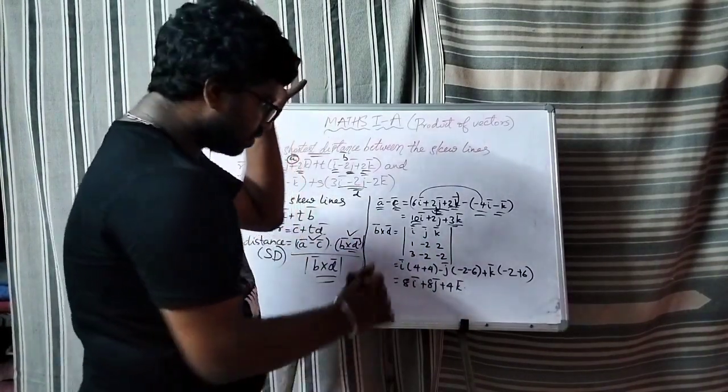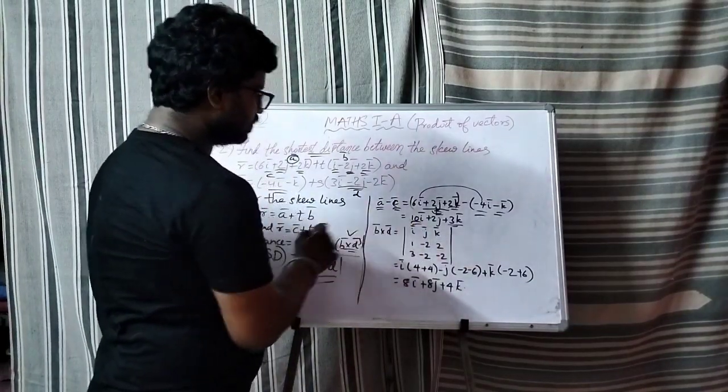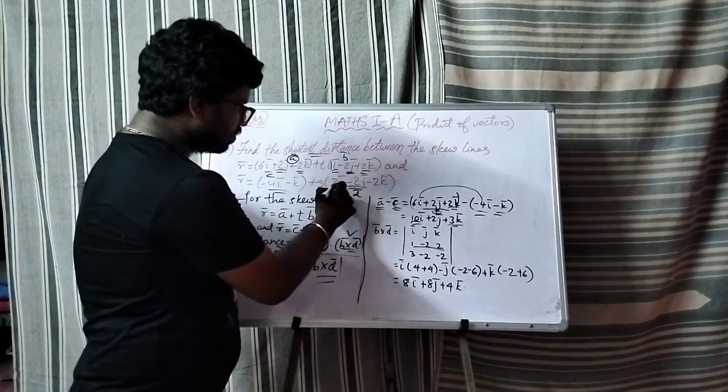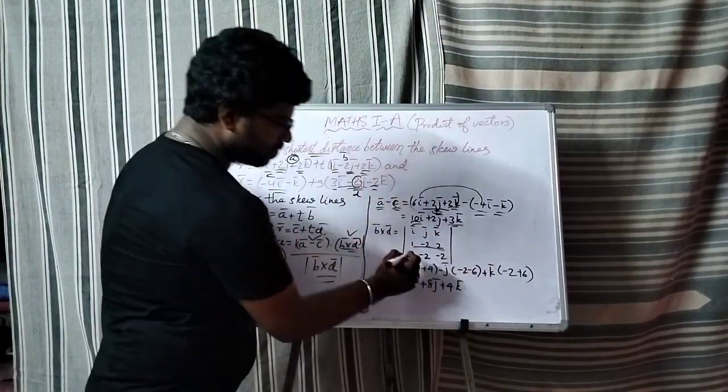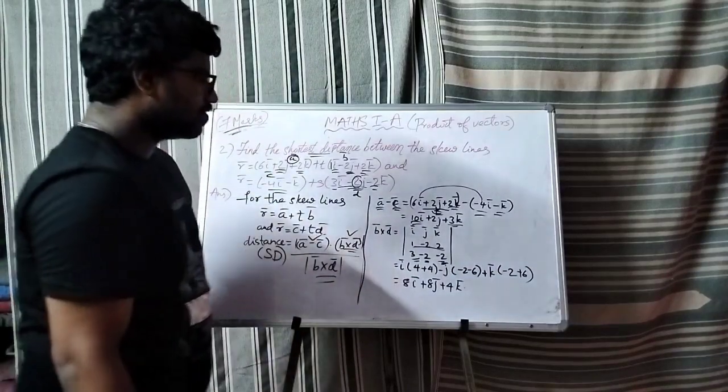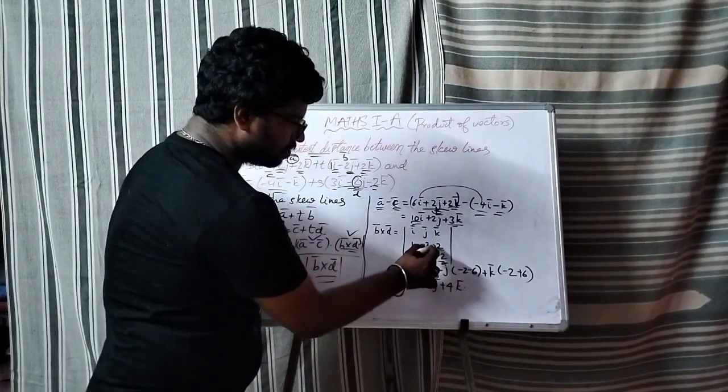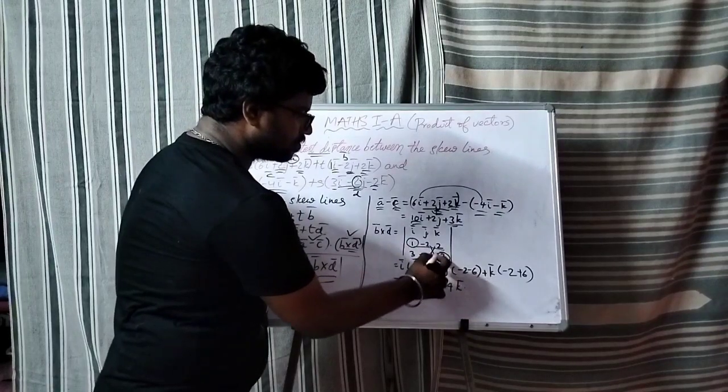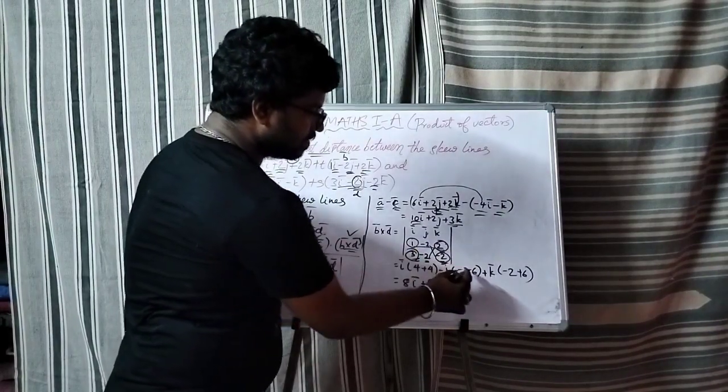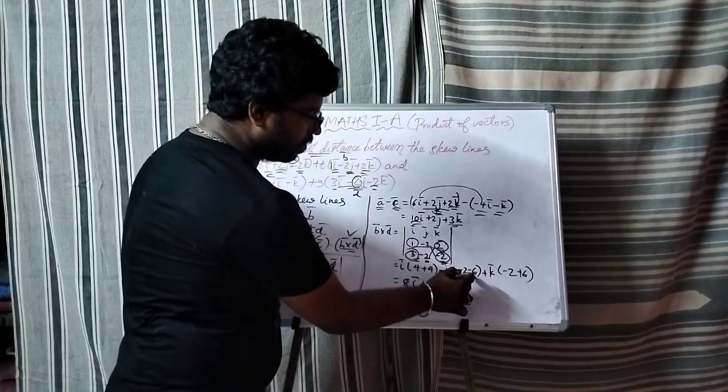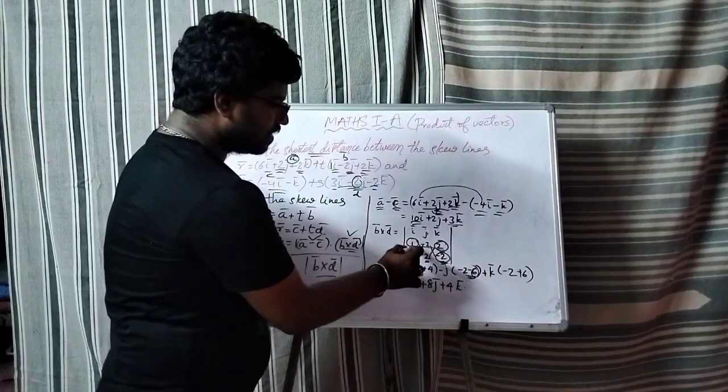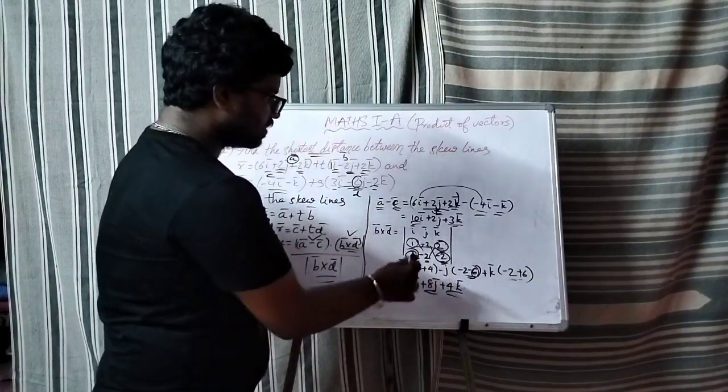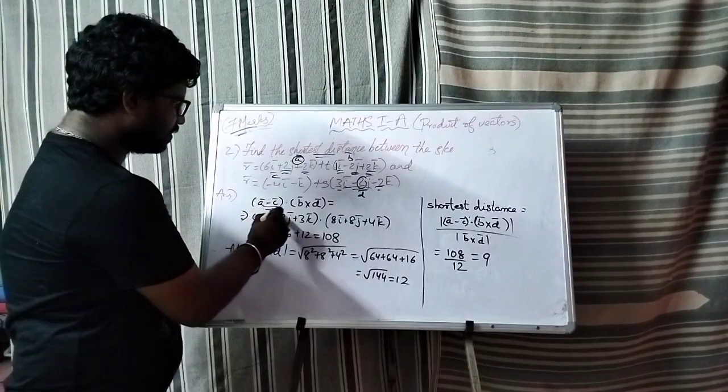Now b bar cross d bar. Write i cap j cap k cap. b bar coefficients are 1 minus 2, and d bar coefficients are 3 minus 2. Computing the determinant gives 8i minus 8j plus 4k.